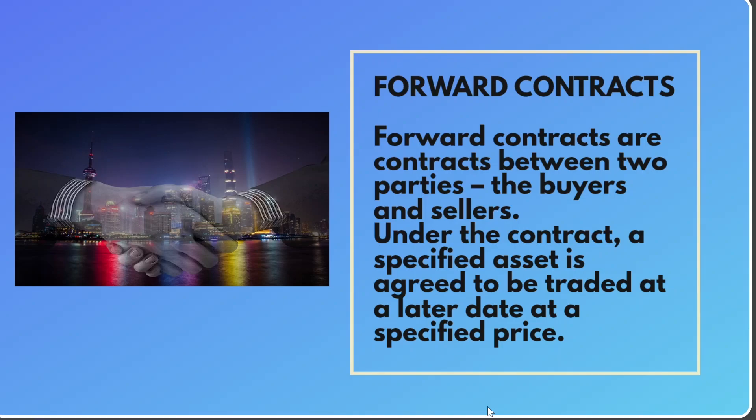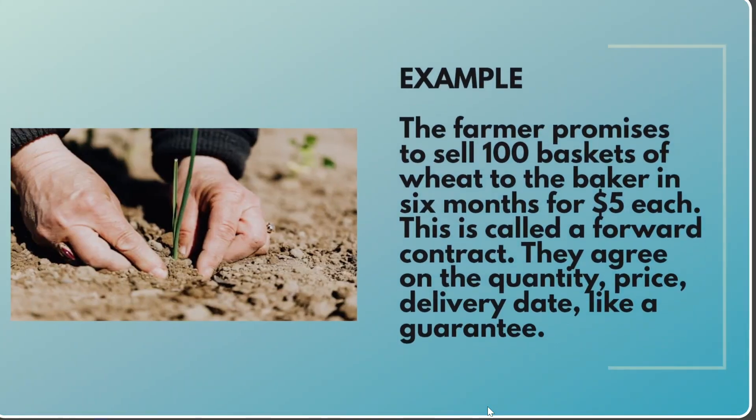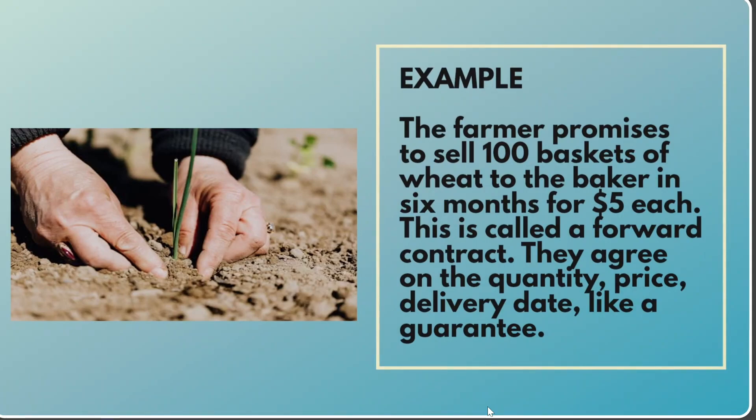Forward Contracts are contracts between two parties — the buyers and sellers. Under the contract, a specified asset is agreed to be traded at a later date at a specified price. For example, a farmer promises to sell 100 baskets of wheat to the baker in 6 months for $5 each. This is called a forward contract.